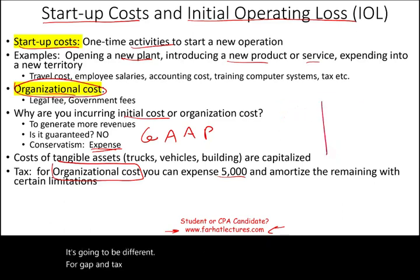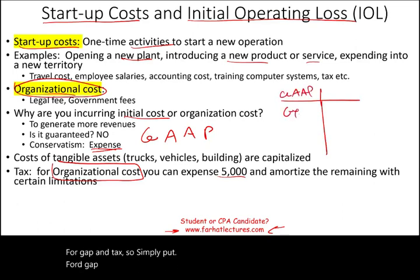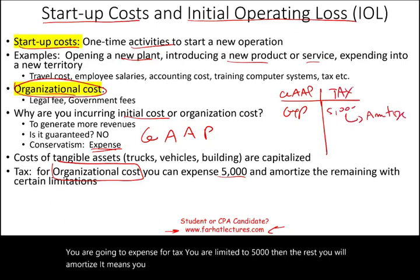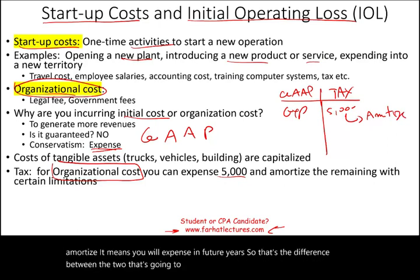Simply put, for GAAP you are going to expense. For tax, you are limited to $5,000, then the rest you will amortize — meaning you will expense in future years. That's the difference between the two, and that's going to create a difference in taxable income, financial income, and operating income.